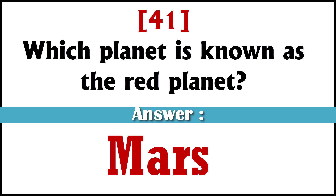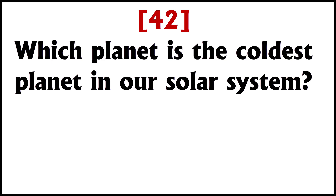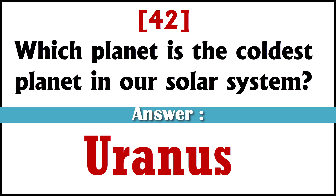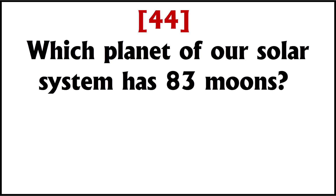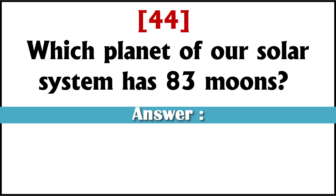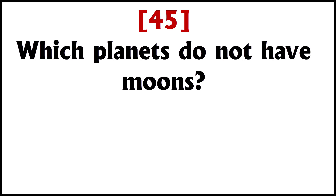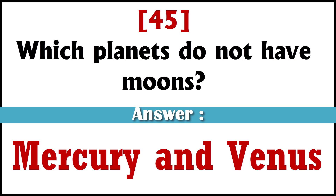Which planet is the coldest planet in our solar system? Uranus. Which planet is the smallest? Mercury. Which planet of our solar system has 83 moons? Saturn. Which planets do not have moons? Mercury and Venus.